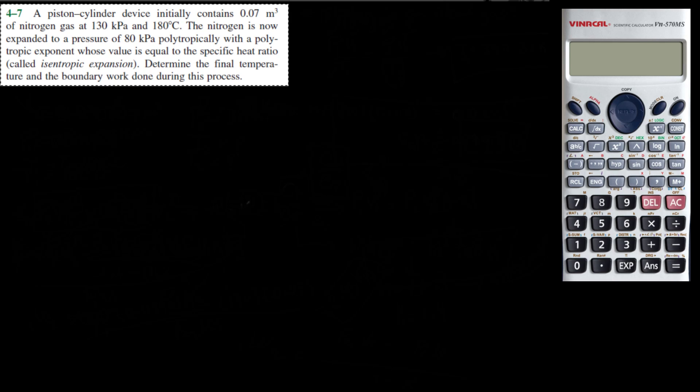Hello everyone, today we are going to answer question 7 from chapter 4, so let's start reading. A piston cylinder device initially contains 0.07 meter cubed of nitrogen gas at 130 kilopascals and 180 degrees Celsius. So let's write our initial conditions here. V1 is 0.07 meter cubed, P1 is 130 kilopascals and T1 is 180 degrees Celsius.